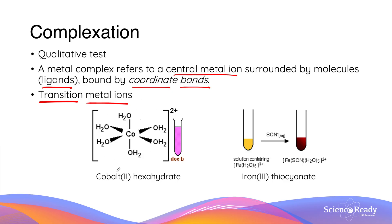For example, cobalt(II) hexahydrate gives a very unique pink color. We also looked at the formation of iron(III) complexes — with water, which gives a yellow color, or with the thiocyanate ion, which gives a deep blood red color. It is important to remember that only transition metals can form these complexes, so complexation tests are only applicable for transition metals.